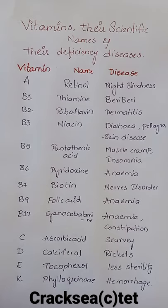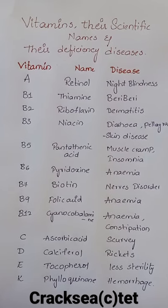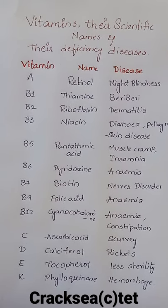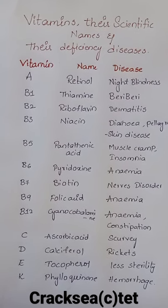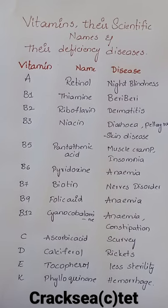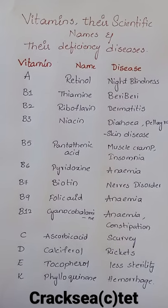B12, scientific name cyanocobalamin, deficiency diseases: anemia and constipation. Vitamin C, scientific name ascorbic acid, deficiency disease: scurvy.